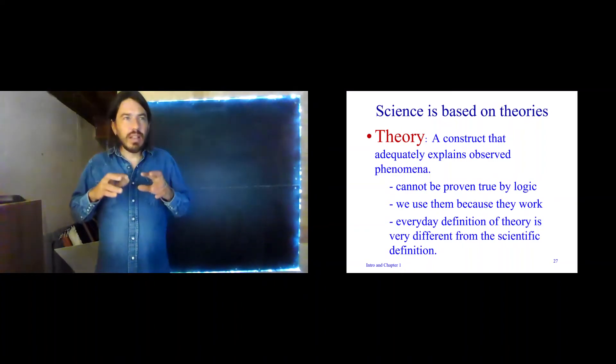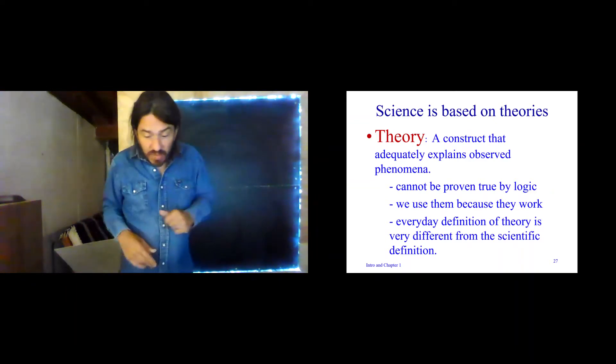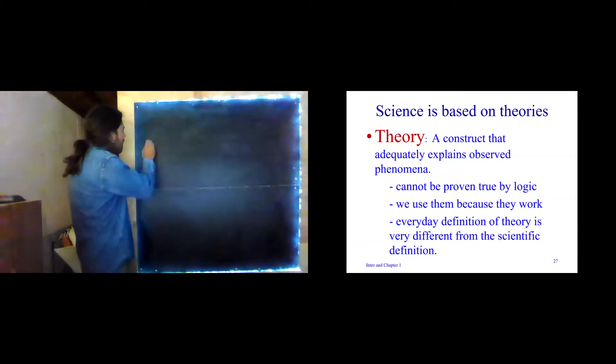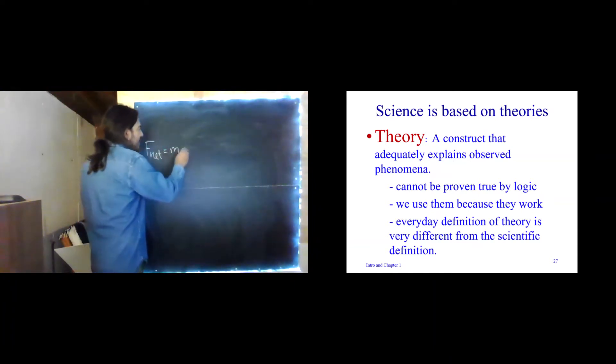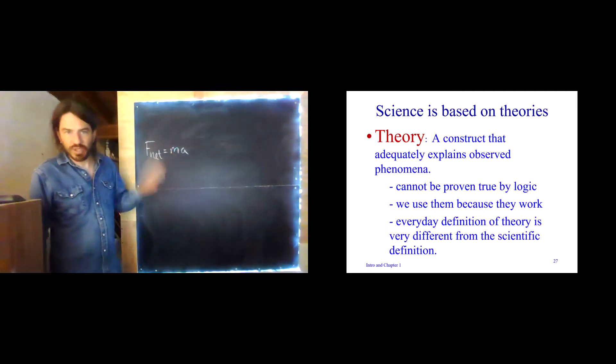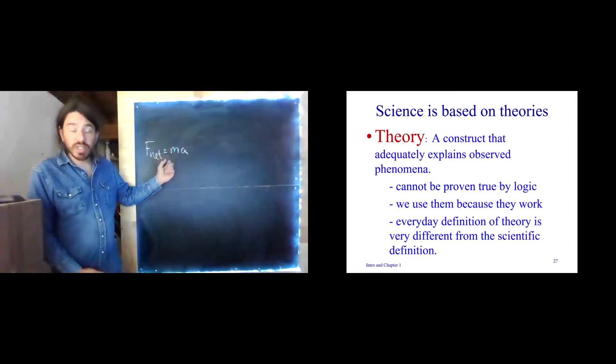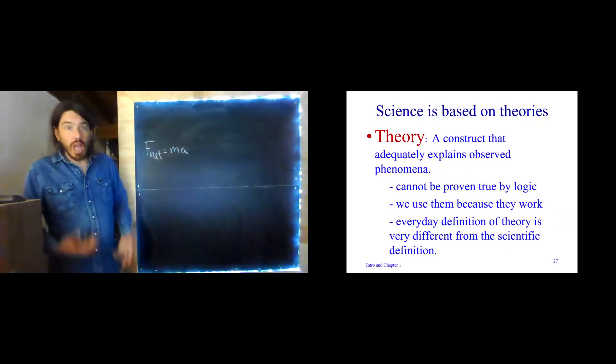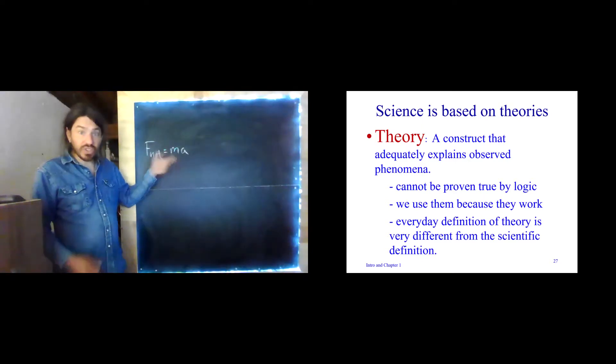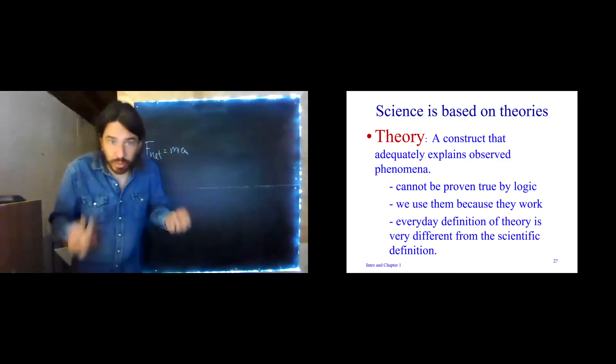In science, theory means something that has been repeatedly demonstrated to be useful. In the previous segment, I mentioned Newton's second law: force is equal to mass times acceleration. This is a theory. Newton published this the first time in the 1600s. It can't be proven by logic, there's no train of logic that leads to this. It's just his idea. And here we are, almost 400 years later, and we still are pretty sure it's true.